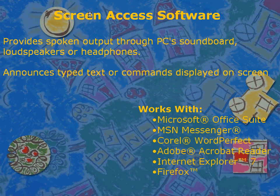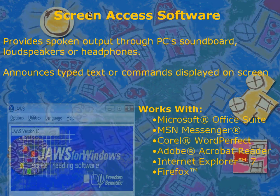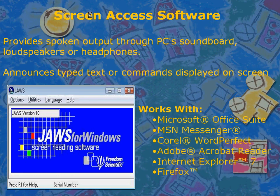Screen access software provides spoken output through the PC soundboard, loudspeakers, or headphones. With this software, a student can listen to announced typed text or command displays on the screen. One such software is JAWS for Windows, which works with Microsoft Office Suite, MSN Messenger, Corel WordPerfect, Adobe Reader, Internet Explorer 7, and Firefox.